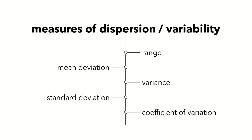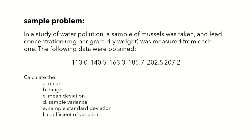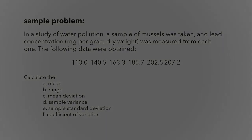That's the last measure of dispersion for this lecture. To summarize, the five measures of dispersion we discussed are: the range, the mean deviation (and total deviation), the variance (population and sample), the standard deviation (population and sample), and the coefficient of variation. If you want to review and practice, I've included a sample problem — pause the video to solve it first, or screen-capture the question and answer it whenever you're available. That's all for this lecture; I hope you were able to follow along and I hope you enjoyed this lesson. See you in the next one.